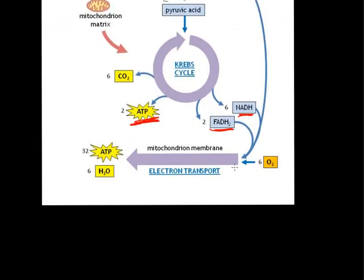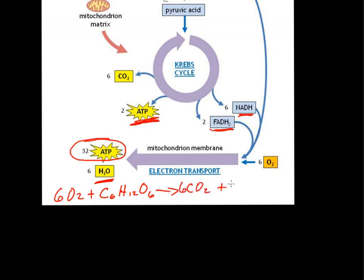And those go on to donate electrons to the electron transport system, along with a requirement of oxygen to produce a lot more ATP than the rest of the process, plus some water as a byproduct. And so if we think back to our overall process for this, it was 6 O2 plus C6H12O6 yields 6 CO2 plus H2O.